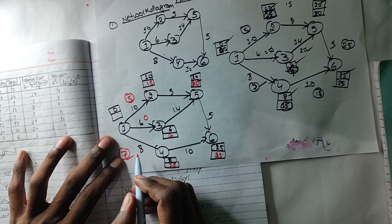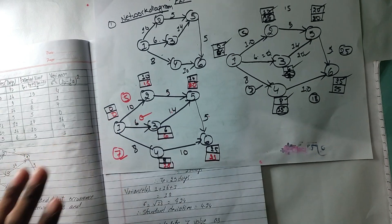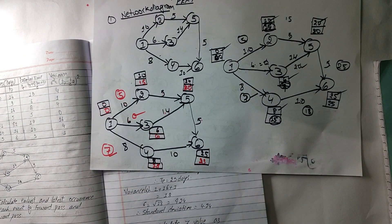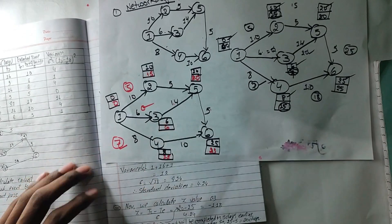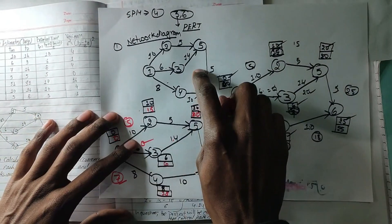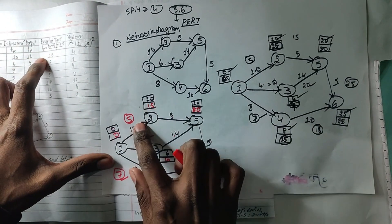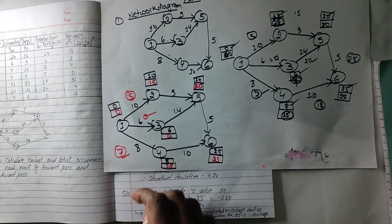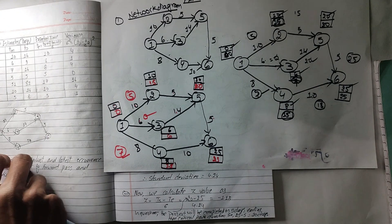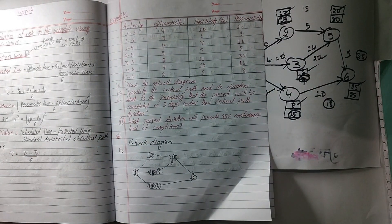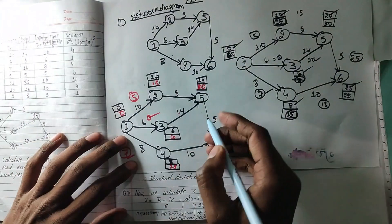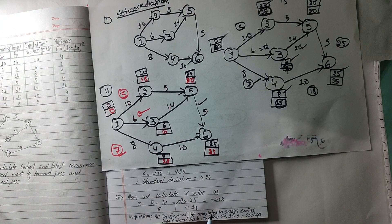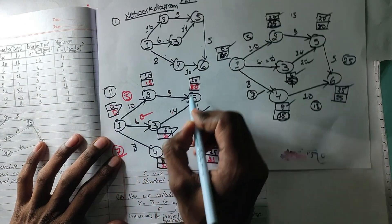Here we have to write 0. So the minimum value is 0. This is clear cut — this is the network diagram. We have to write this point: this is 10, 5, 6, 4, 10. It is a possible test question. Critical path — we need to draw the network diagram.